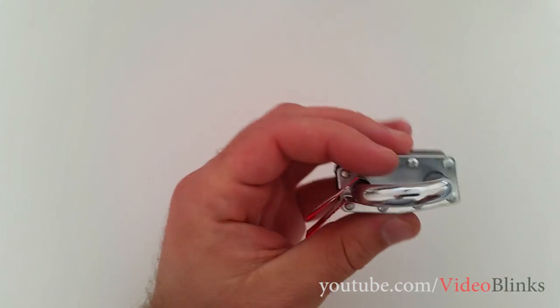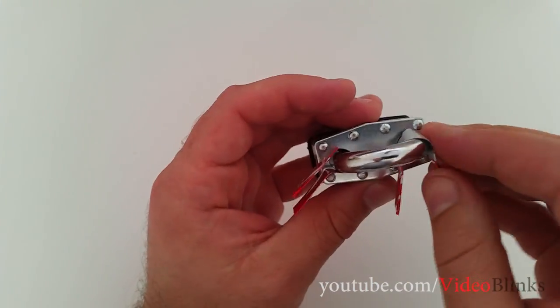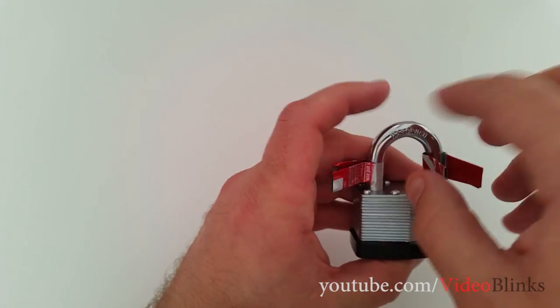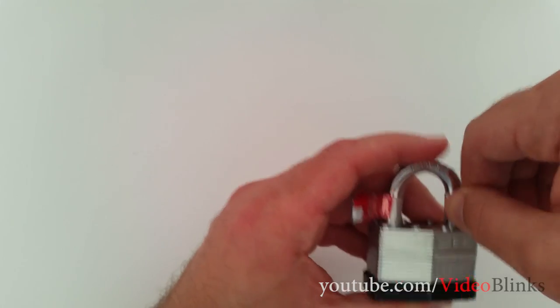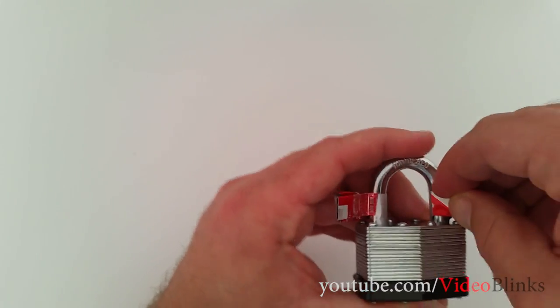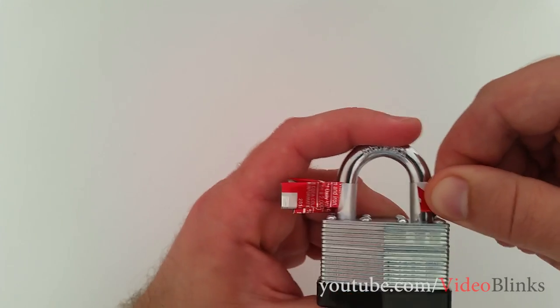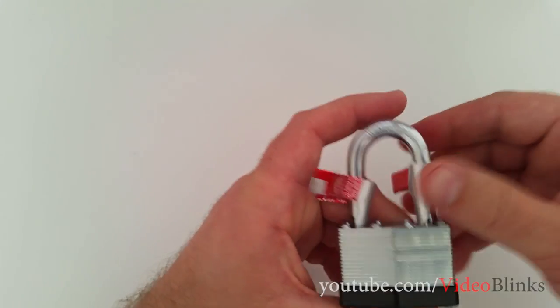We have to do the same thing on the other side. Take the shim, put it in, keep pressing here. Once it is in, turn this side, like this.